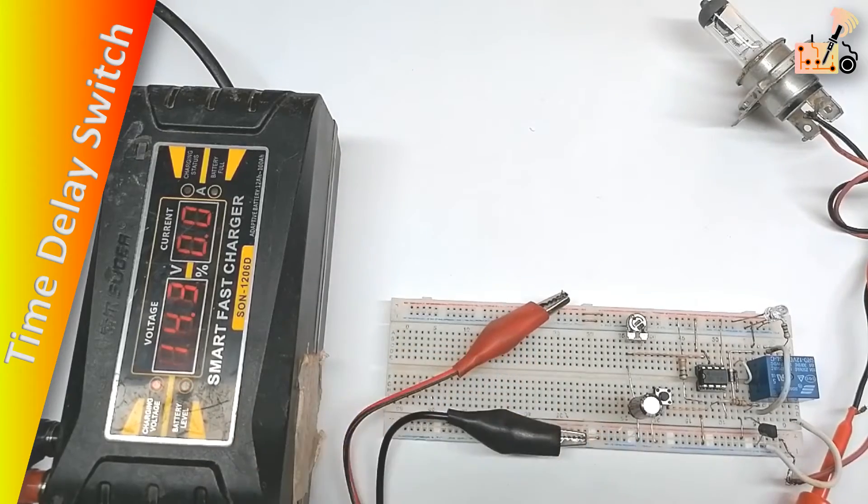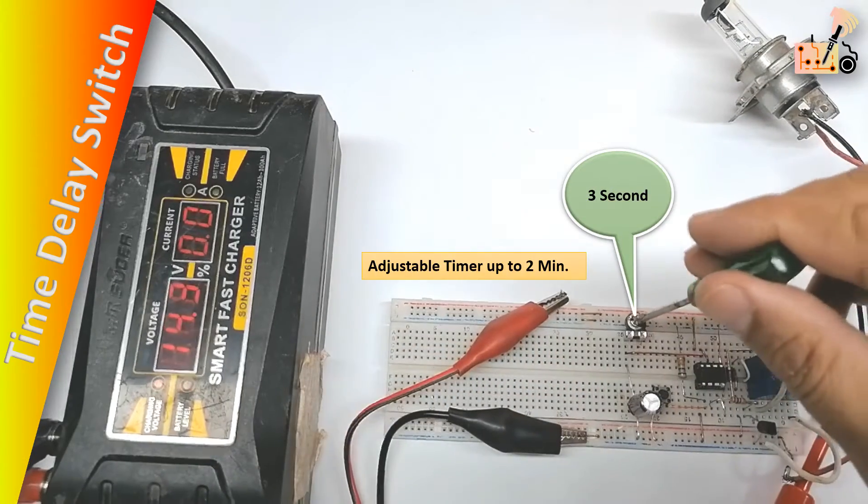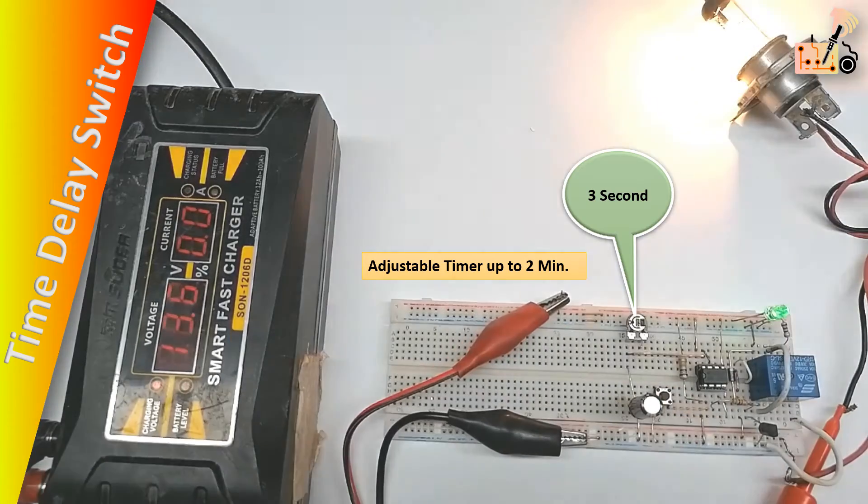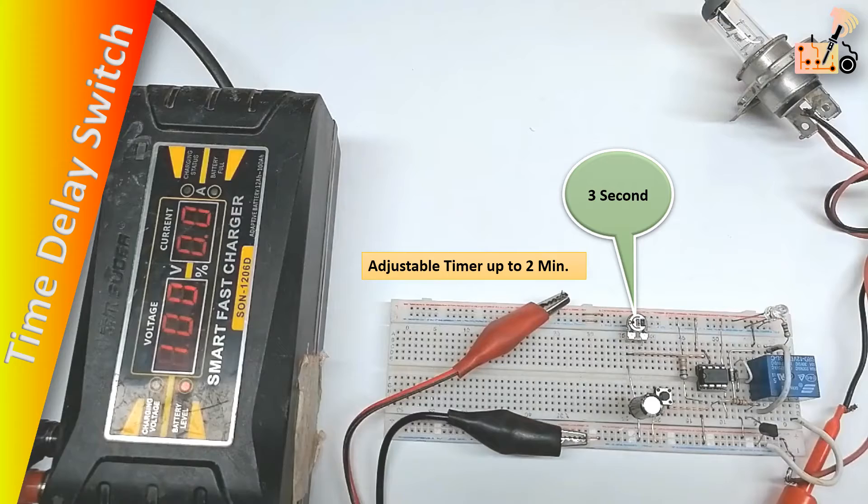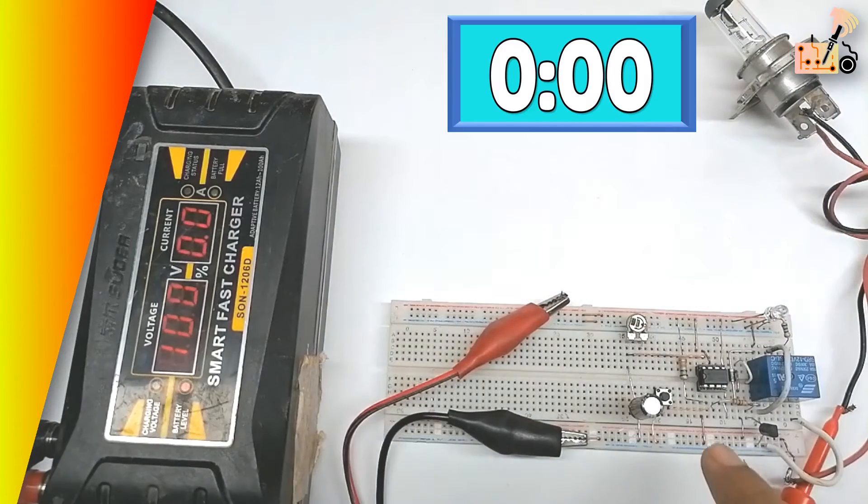While the timer is initially set to adjust time from 3 seconds to 2 minutes, it is possible to extend the duration up to one hour by altering the values of VR1 and C1 in the circuit.